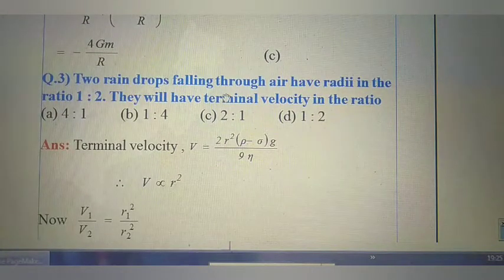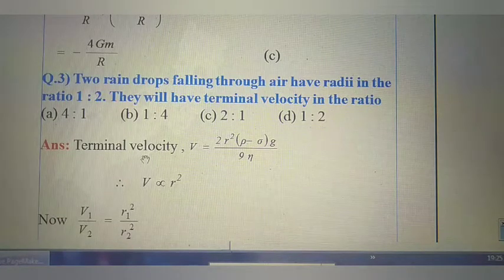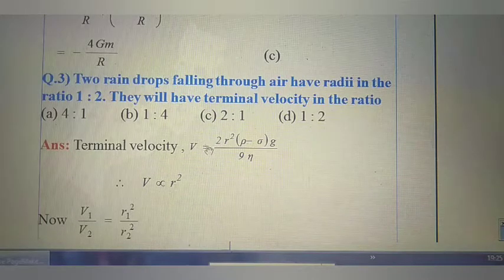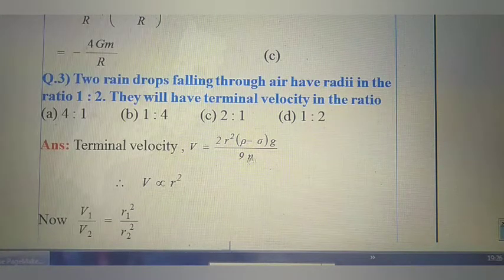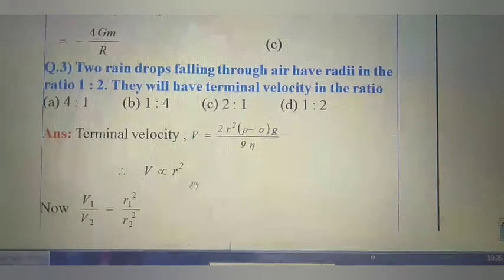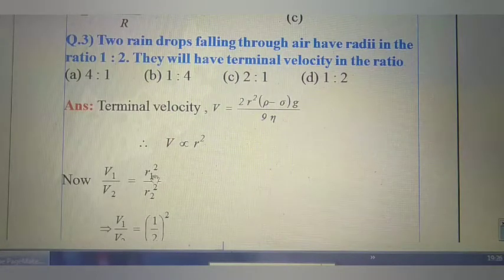Next question: Two raindrops falling through air have radii in the ratio 1:2. They will have terminal velocity in the ratio — to solve this we need the terminal velocity formula: V_t = 2r²(ρ − σ)g / 9η, where r is the radius of the spherical body, ρ is density of the body, σ is density of the fluid, η is coefficient of viscosity, and g is acceleration due to gravity. Since ρ, σ, g, and η are all constant, terminal velocity is proportional to r². So V1/V2 = r1² / r2².